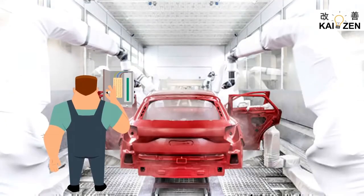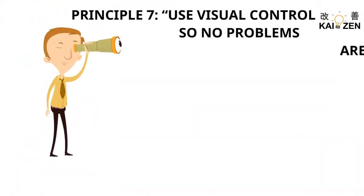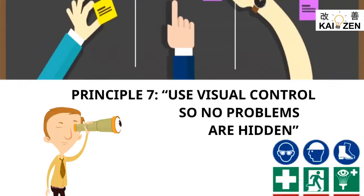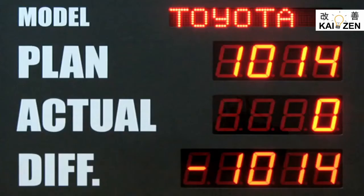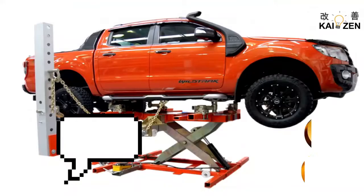Principle 7: Use visual control so no problems are hidden. Controlling the work with visual standards is needed. We should be able to find out whether the work is going on okay or not just by looking at it. TPS encourages looking at actual work as against looking at computers.